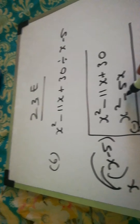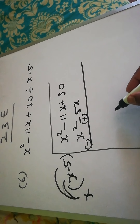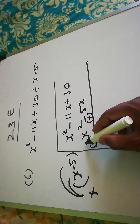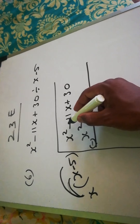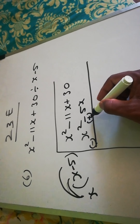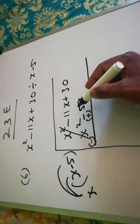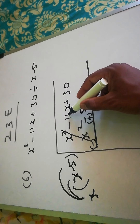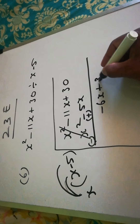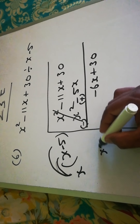Now we change the sign — the plus becomes minus, and the minus becomes plus. Don't look at the top symbol; just write the opposite sign. The plus and minus cancel, leaving minus 11 plus 5, which is -6x. Bring down the +30.